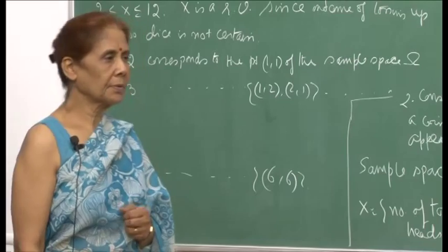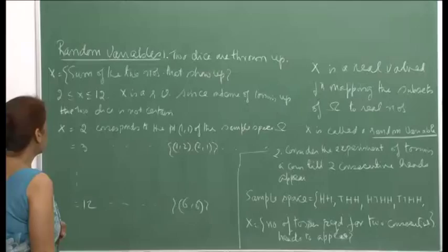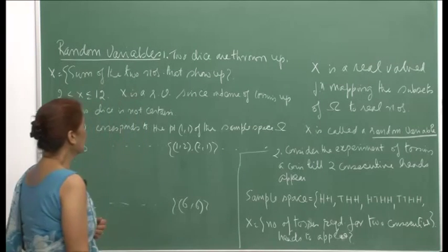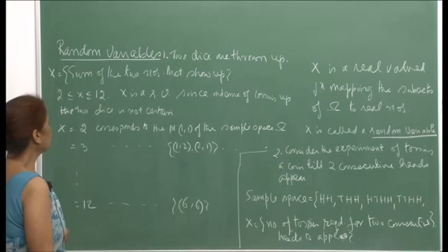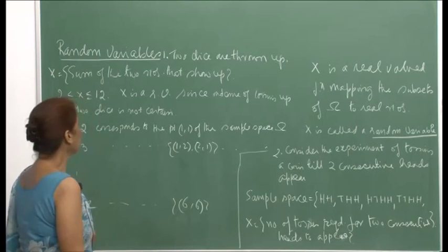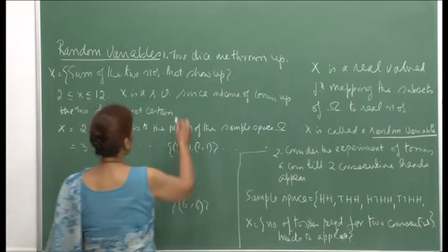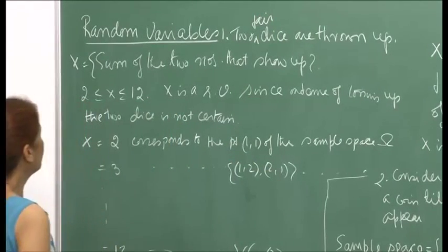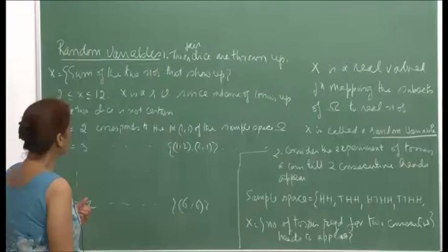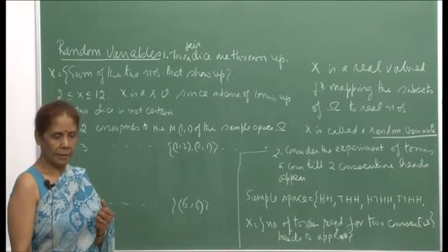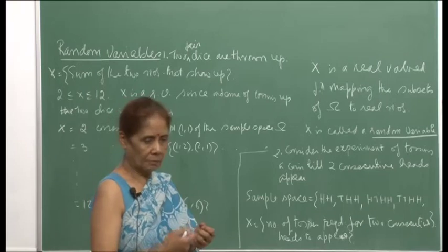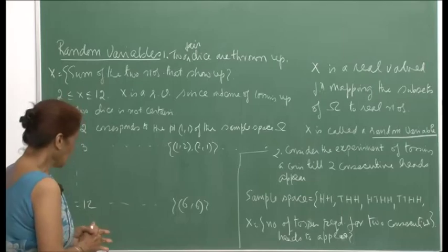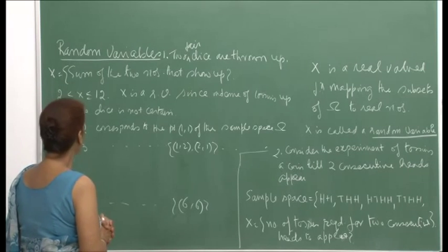I will now introduce the concept of random variables. Let me begin by giving some examples first. Suppose 2 fair dice are thrown up. Let x denote the sum of the 2 numbers that show up — whatever the 2 numbers are when I throw the 2 dice, I add them up and denote that sum by x.